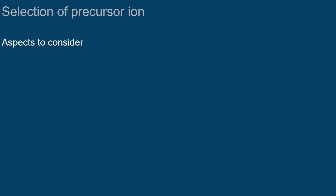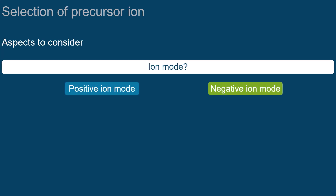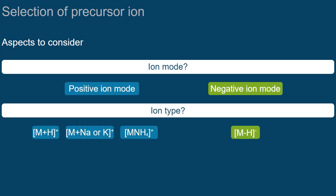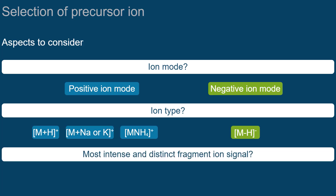First, let's review aspects in choosing the optimal precursor ion. You need to clarify if the positive or negative ion mode gives you the most intense precursor and which ion type this could be. But the most intense precursor is not optimal unless it yields intense and distinct fragment ions.